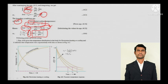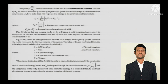This equation gives the temperature distribution in the body for Newtonian heating or cooling, and it indicates that the temperature rises exponentially with time - as seen from the exponential term e in the equation and in the graph.